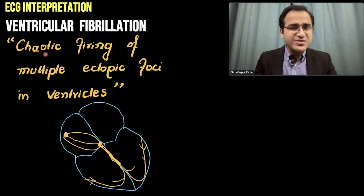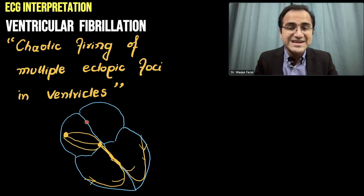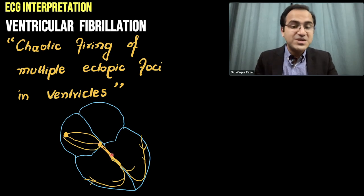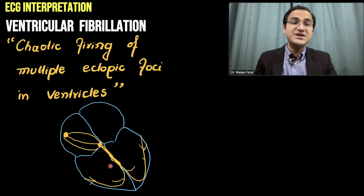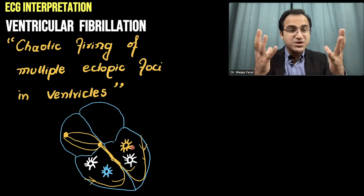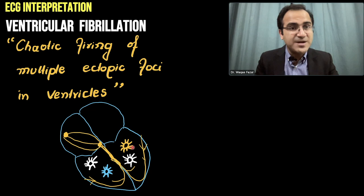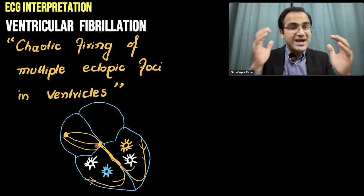Ventricular fibrillation is a chaotic firing of multiple ectopic foci in the ventricles. Normally, the SA node produces electrical currents that cause contraction of the atria. These travel through internodal pathways to the AV node, which sends signals through the bundle branches to the Purkinje fibers, causing ventricular contraction. In ventricular fibrillation, ectopic foci in the ventricles generate abnormal electrical activity and compete with the SA node — and they win.